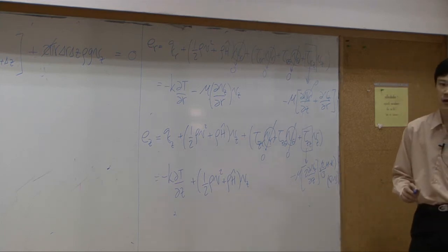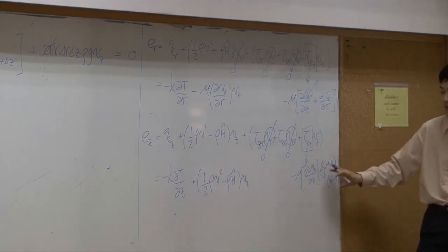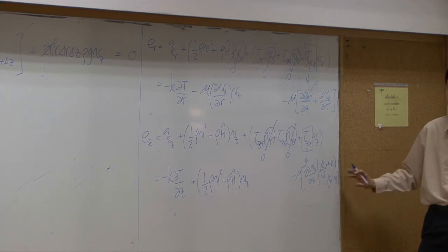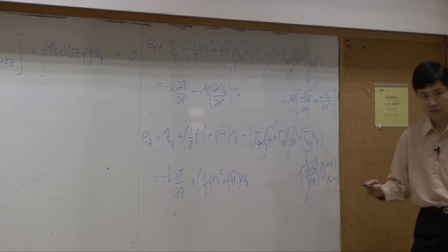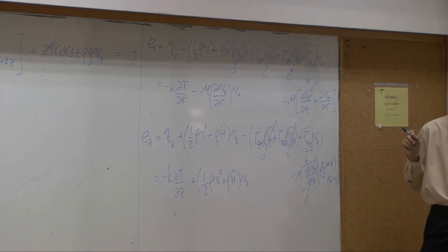Using Newton's law, you expand tau Z to be this equation. The first term of V Z by D Z, the whole thing here becomes zero, because V Z does not change with respect to Z, there is no acceleration.